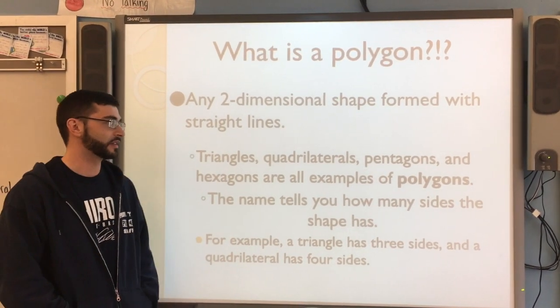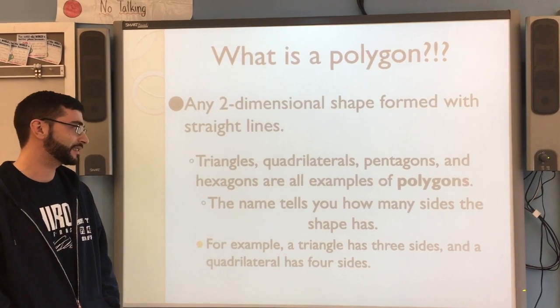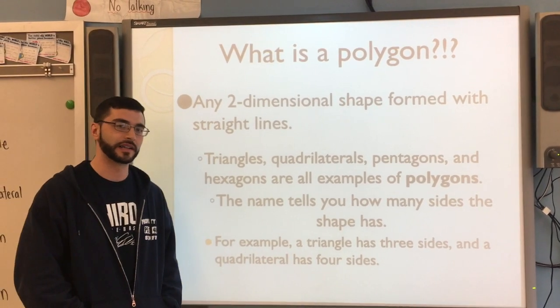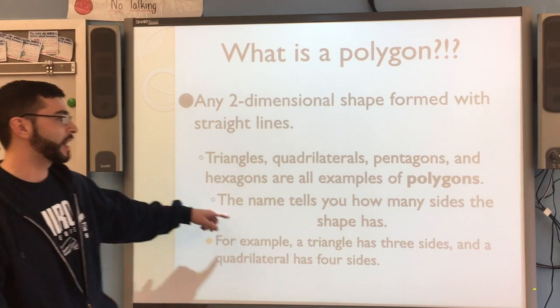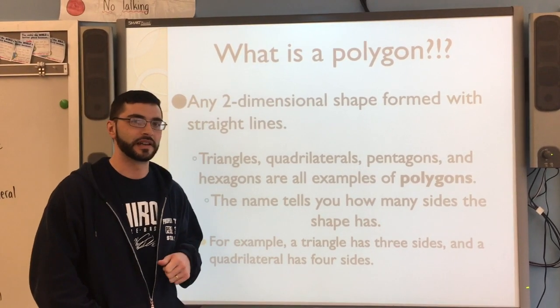It can be seen as triangles, quadrilaterals, pentagons, hexagons. Those are all different examples of polygons. The name tells you how many sides the shape has.